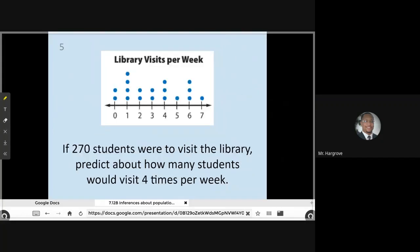Okay, let's move on to the next example. And now we're dealing with a dot plot that's looking at library visits per week. It says if 270 students were to visit the library, predict how many students would visit four times per week. They want us to make a prediction here. So what I'm going to do is I'm going to focus my attention right here on that area because that is the students that chose four times per week. And I see three dots there. So that means three students chose four times per week.